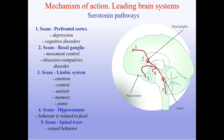Serotonin pathways. There are five pathways: first, to prefrontal cortex — depression and cognitive disorders; second, to basal ganglia — movement control and obsessive-compulsive disorder; third, to limbic system — emotion control, anxiety, memory, panic; fourth, to hippocampus — behavior related to food; fifth, to spinal tract — sexual behavior.